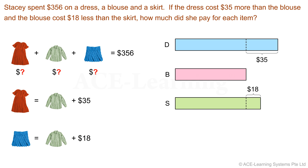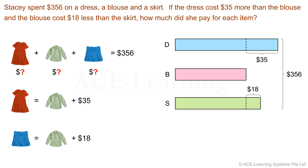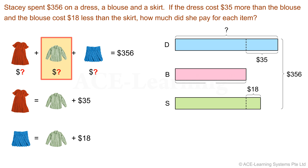Do we have more information to add to the model? We are told that she spent a total of $356. We'll use a curly bracket to represent the sum and indicate $356. And what are we to find? The amount she paid for each item. In our model, we indicate the quantities we are to find with a question mark — one for the dress, one for the blouse, and one for the skirt.